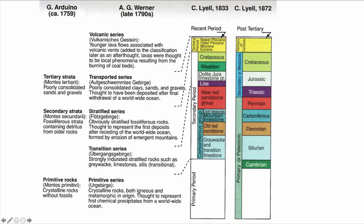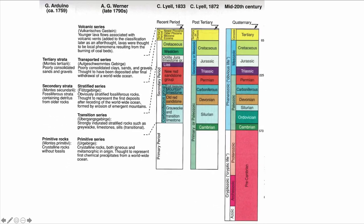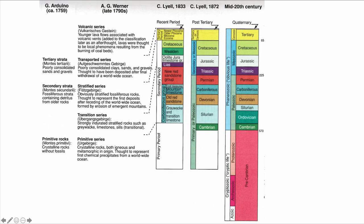These terms are still used today, but with different definitions. The time chart evolved even in the 20th century, because the terms primary and secondary were abandoned in the middle of the 20th century in favor of the term Phanerozoic, which can be divided into Paleozoic, Mesozoic, and Cenozoic — more recent terminology.